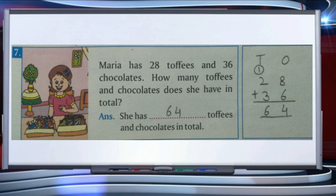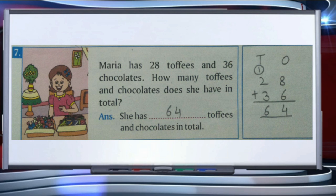We write 4 on the ones place and 1 goes as carry to the tens place. Now we add the tens place: 2 plus 3 is 5, and 1 carry makes 6. So the answer is 64 — Maria has 64 toffees and chocolates in total.